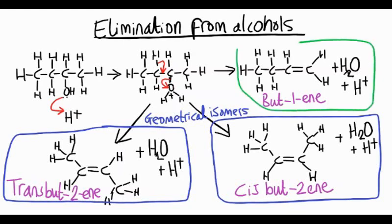But what's the relationship between these two and but-1-ene? Well, the alkene group, the double bond's in a different position on the chain. So that's also a positional isomer of but-2-ene.